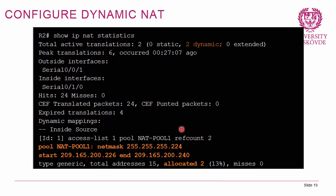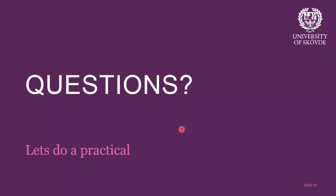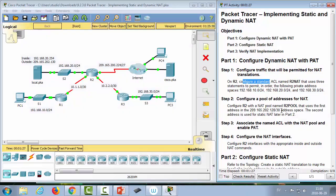Configuring Port Address Translation is straightforward. Create a standard access list permitting the addresses to be translated. Then establish the dynamic source translation using: ip nat inside source list [ACL] interface [exit-interface] overload. The keyword overload enables PAT. Then apply ip nat inside and ip nat outside to the respective interfaces.